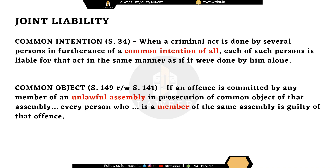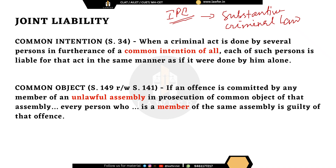We will now begin with important concepts in the IPC. The Indian Penal Code is the major substantive criminal law of our country. It defines various offenses and prescribes punishment for them. The first kind of offense we look into is joint liability, specifically section 34 and section 149 read with 141. Section 34 talks about common intention: when a criminal act is done by several persons in furtherance of a common intention of all, each person is liable for that act as if it were done by him alone.